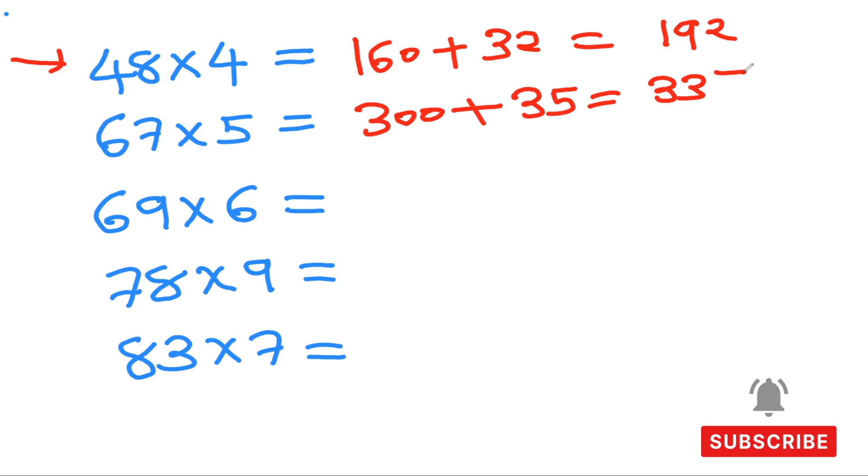69 times 6, so 60 times 6 is 360 plus 9 times 6 is 54, which is going to give me 414.